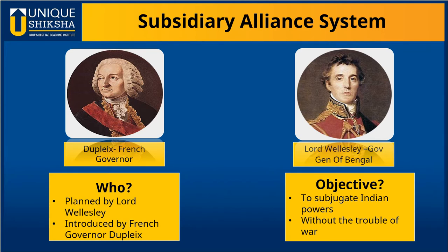Any Indian ruler whose security was threatened was encouraged to seek help from the British East India Company. In return for this protection from external attacks and internal revolts, the Indian rulers had to accept certain terms and conditions.